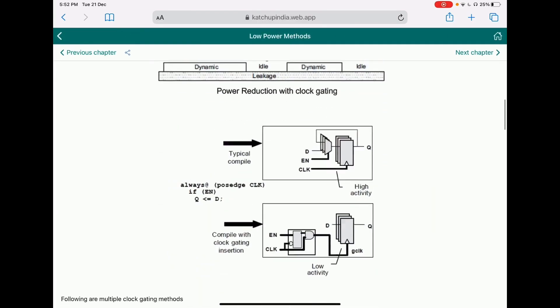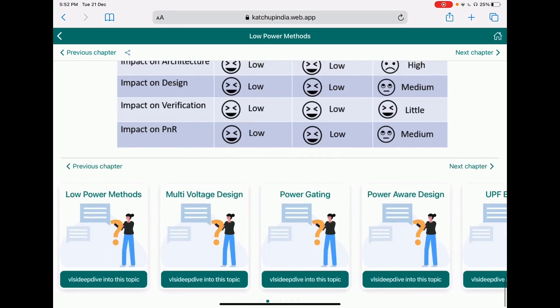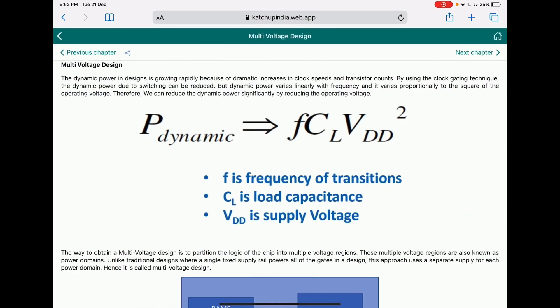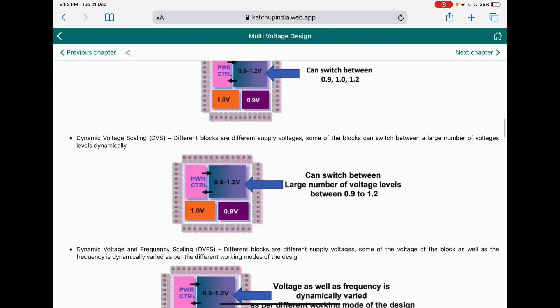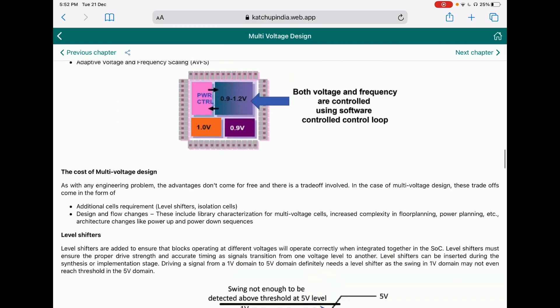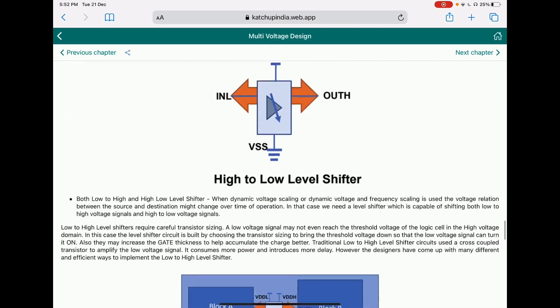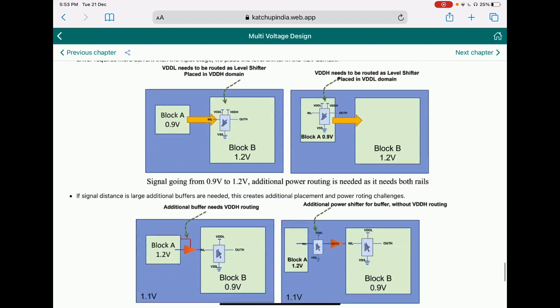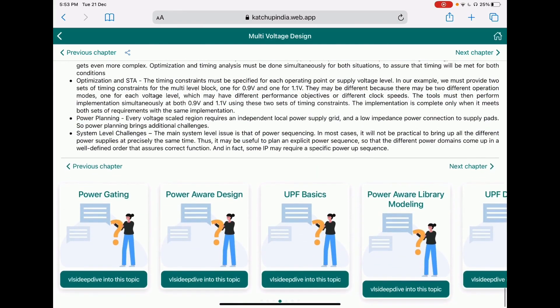Then, what are the low power methods - it goes into details of clock gating, power gating, and multi-voltage designs. The multi-voltage design chapter goes into further details on the various kinds of multi-voltage designs, the need for isolation, level shifters, all covered in much detail and explained pictorially, so it's easy to understand.